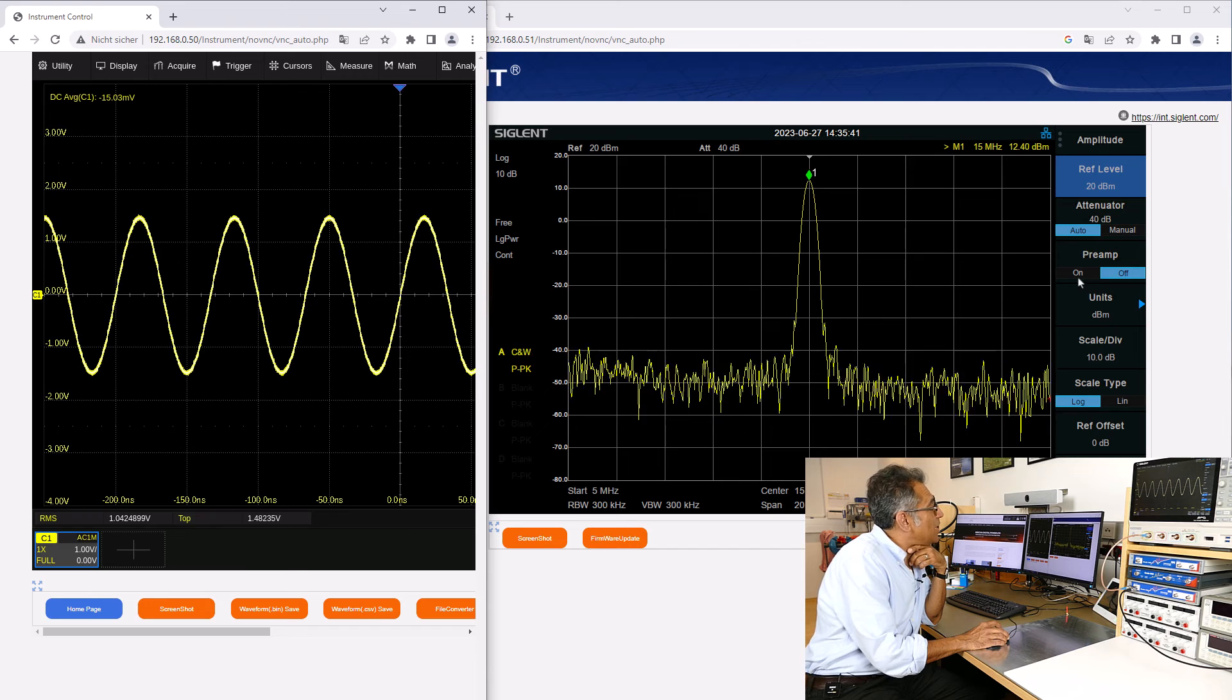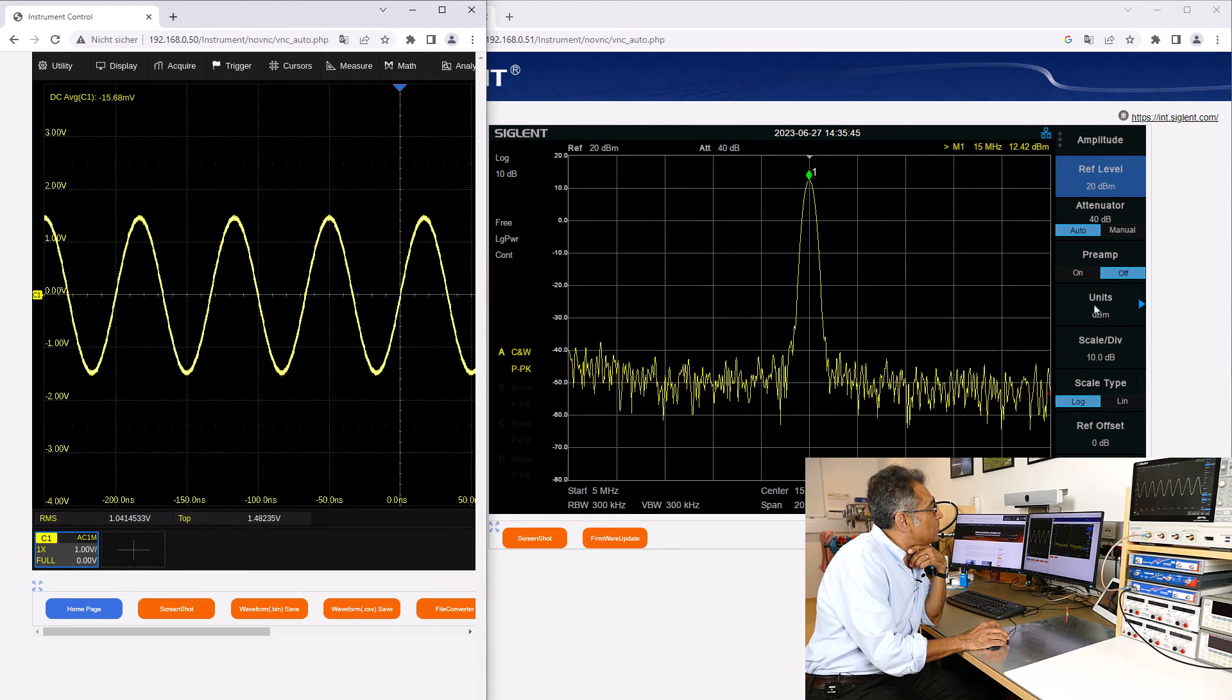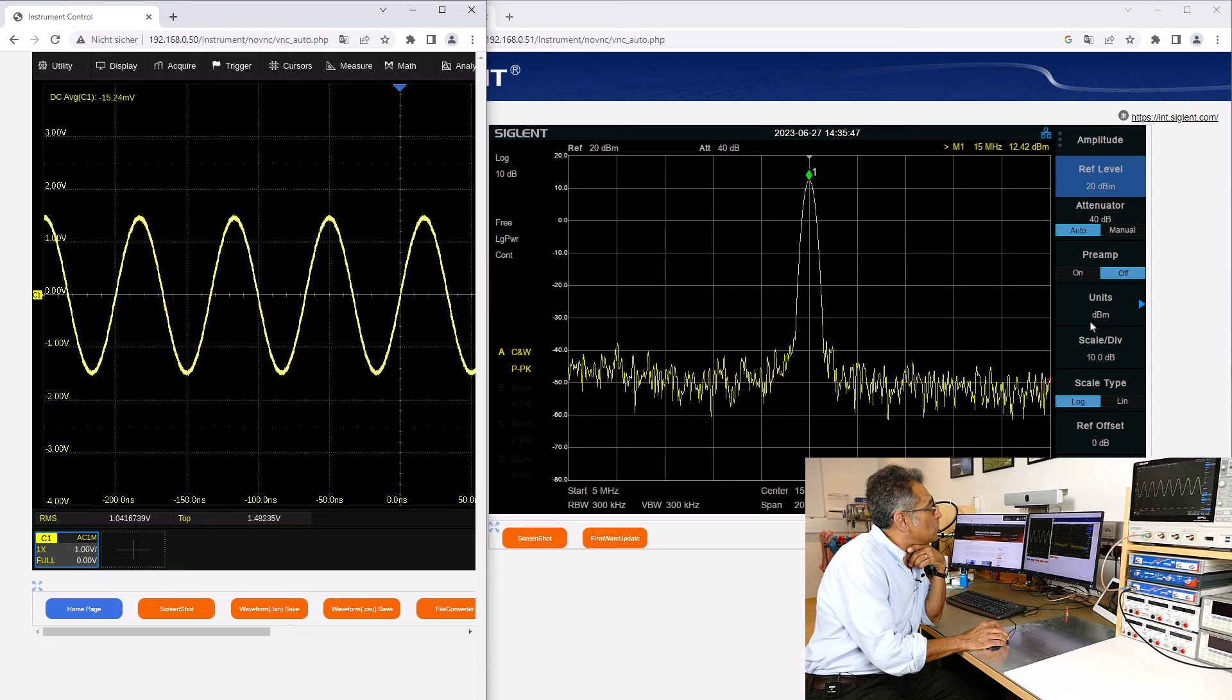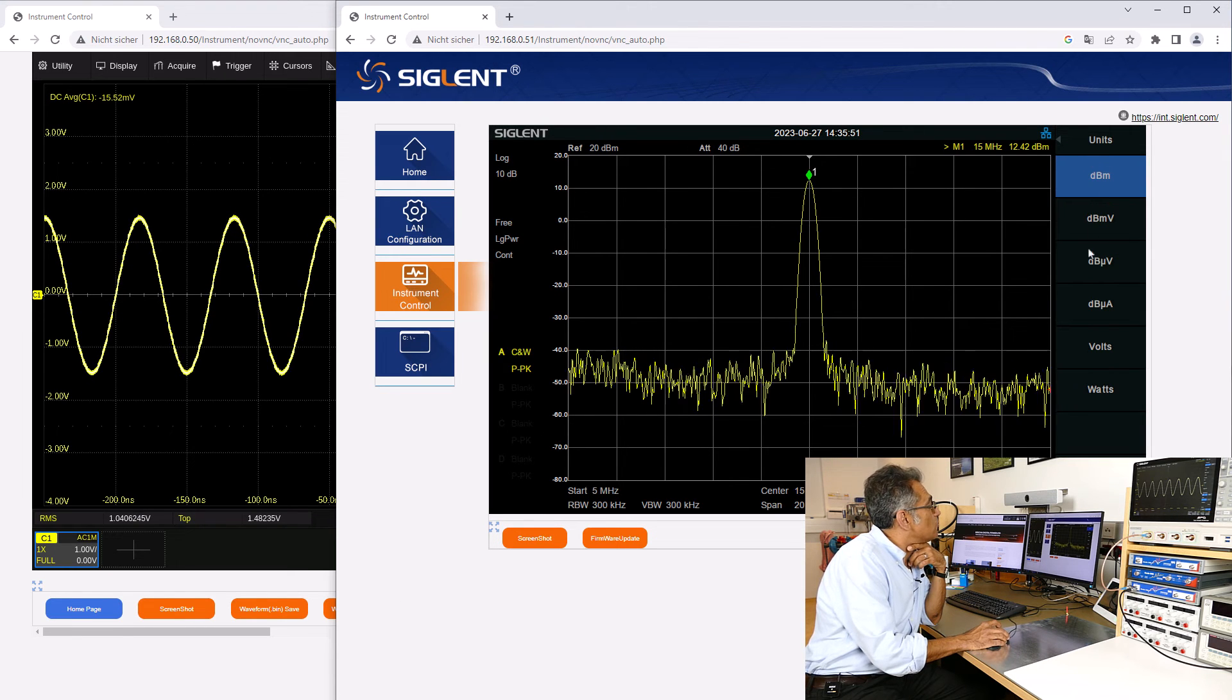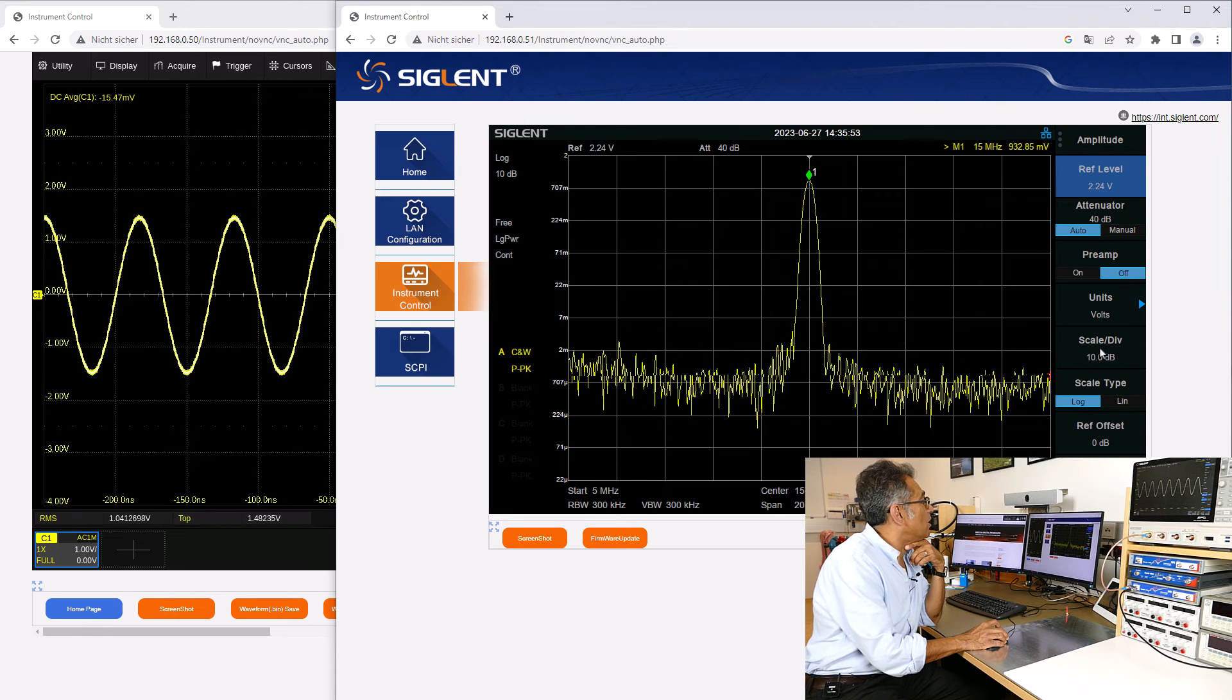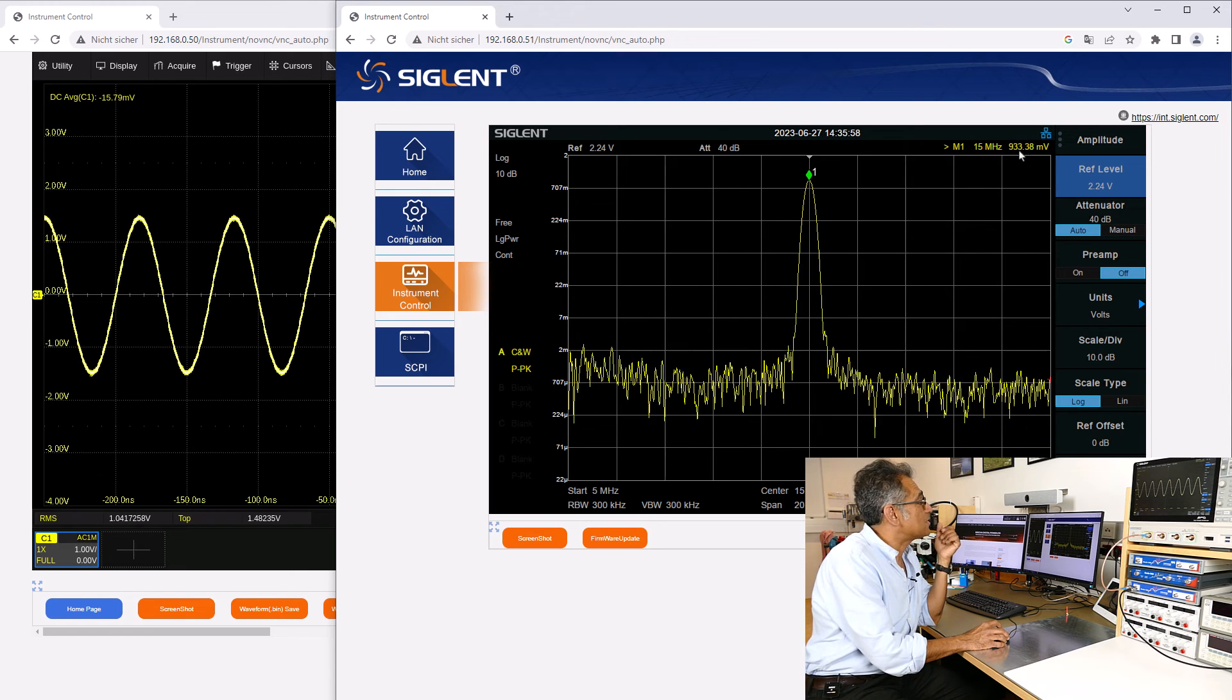However here, I can change the units. You can see that at the moment the spectrum analyzer is showing the units in dBm's, I can change that into volts first, I should get around 1 V RMS, and there we go, we get 933 mV, that is great,